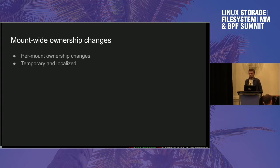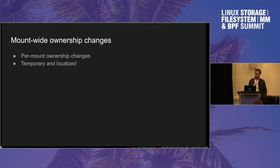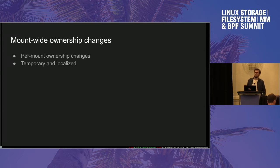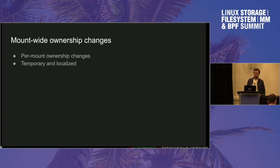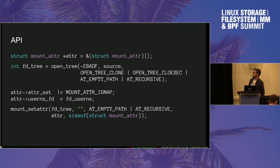A longstanding idea — and the most flexible solution covering all the use cases people brought to us over the years — was to make it possible to change ownership on a per-mount basis instead of a filesystem-wide basis. It's a temporary and localized change in the sense that the ownership change is tied to the lifetime of the mount. In a nutshell, from a high-level perspective, that's everything that ID map mounts are about: you change ownership on a mount-specific basis instead of a filesystem-wide basis, which makes them very suitable for containers.